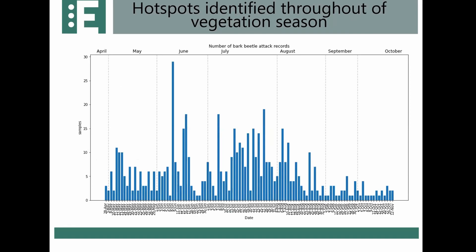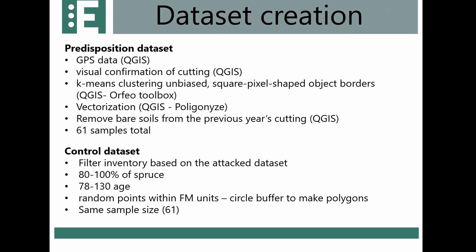This graph shows the number of identified attack points from end of April through early November. We can see the data arriving in a concise way, with visible waves of bark beetle attacks over the season. To filter this input data, we first created a predisposition dataset based on GPS data and placed these points on a raster layer. We can track end-of-season data to validate points that fall inside visually confirmed cutting areas.